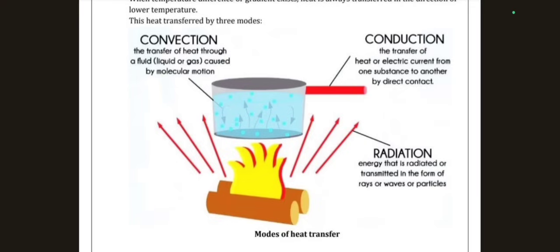Convection is the transfer of heat through a fluid (liquid or gas) caused by molecular motion. Conduction is the transfer of heat from one substance to another by direct contact — for example, a pan handle getting heated. Radiation is energy radiated or transmitted in the form of rays, waves, or particles. In summary: through fluid = convection; direct contact = conduction; rays/waves/particles = radiation.